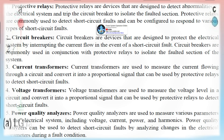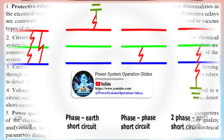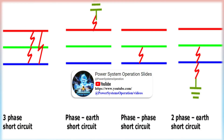Power quality analyzers are used to measure various parameters of the electrical system, including voltage, current, power, and harmonics, and can detect short-circuit faults by analyzing changes in electrical parameters during a fault condition. Fault locators are devices used to locate the exact location of a short-circuit fault in the power system, using techniques such as time domain reflectometry and impedance measurement to locate the faulted section.